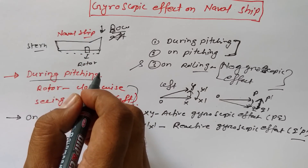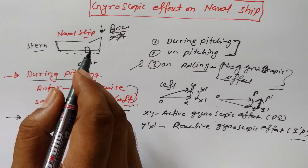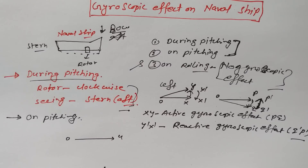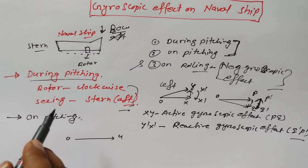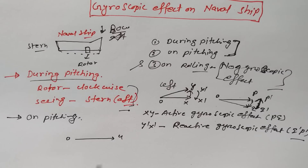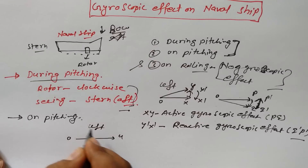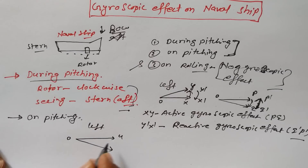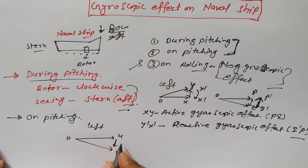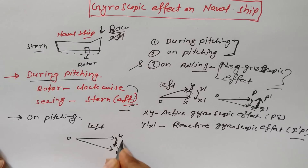So if the naval ship will take a left turn, the momentum vector will change from OU to OV. Here, the active gyroscopic effect would be UV, and the reactive gyroscopic effect would be V-dash to U-dash in the case of a left turn.